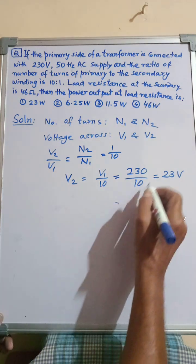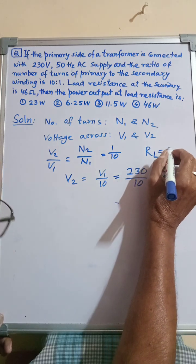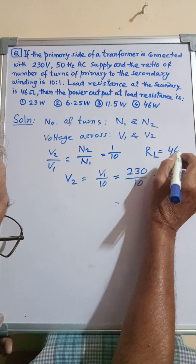Let us write the value RL is equal to 46 ohms.